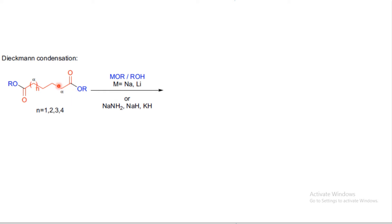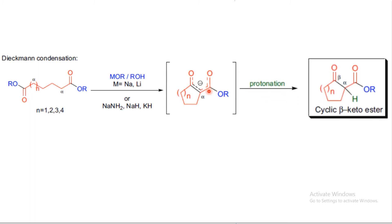That enolate can attack on the other ester to cyclize it. A transition state forms where an anion is generated, and upon workup or protonation of this anion, we obtain a beta-keto ester in this reaction.